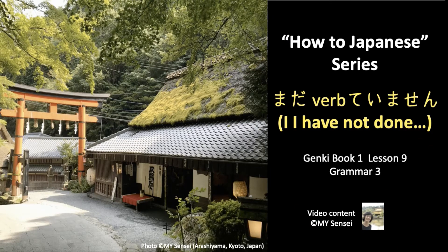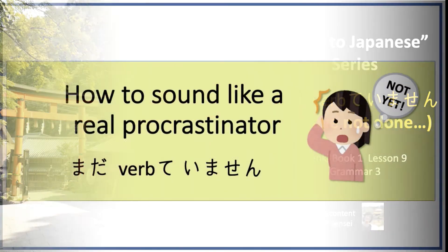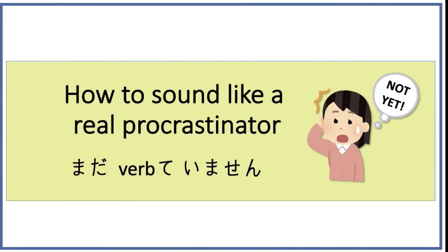Konnichiwa. In this video, you will learn how to use まだ, the verb in its te form, and imasen in your speech. This sentence pattern is used to describe something that you have not done yet.